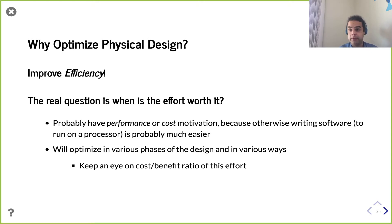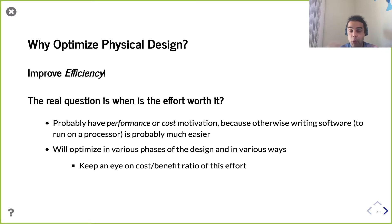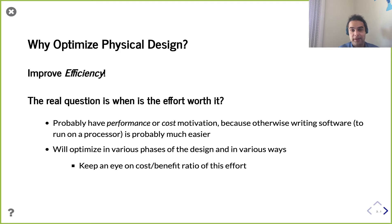If we're going through the effort of building specialized hardware — which I argue is happening more often in the future — it's because we really care about efficiency. Something about running this on a general-purpose CPU wasn't appropriate; instead we need to tailor the hardware to our problem. Whether we want to use less area to reduce cost, get much higher performance, or take less power, there's some motivation for doing that. Keep an eye on what benefit you're really getting.